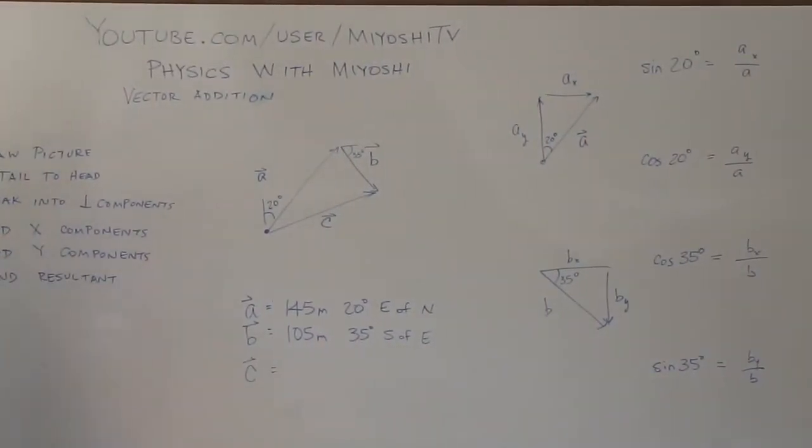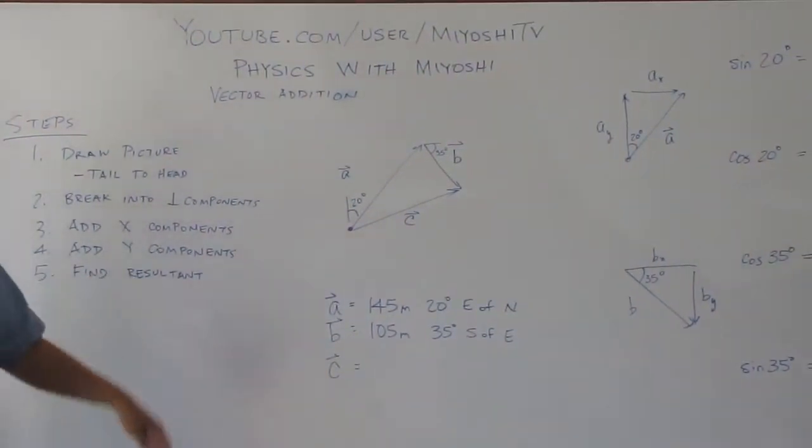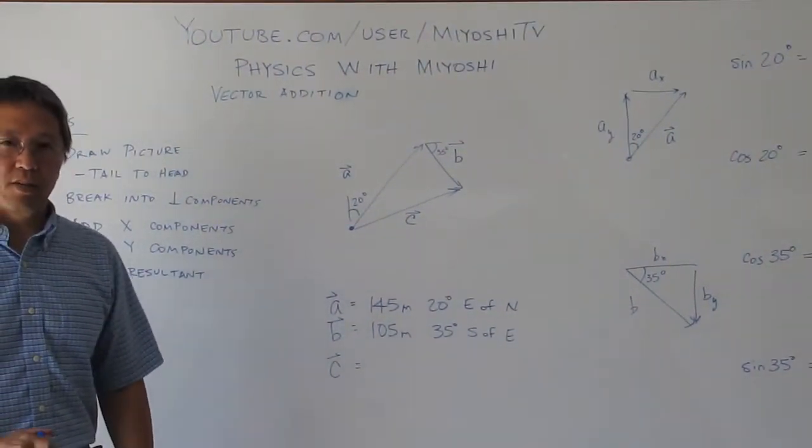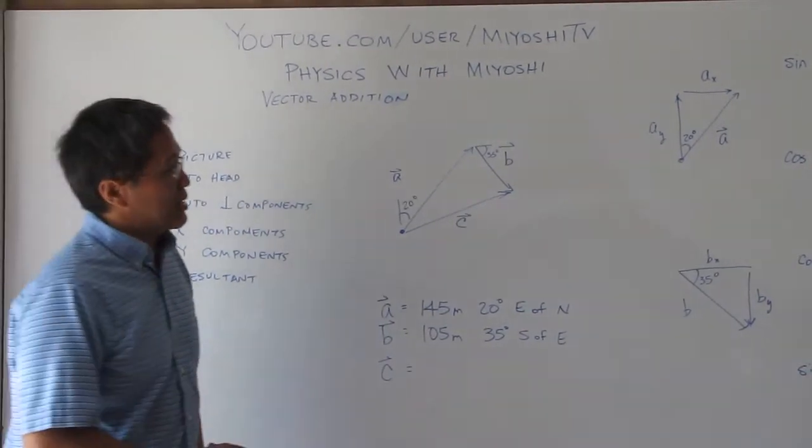Then we're going to add our x components, add our y components, and then we'll find the resultant with our Pythagorean theorem and our tangent, just like we did before.